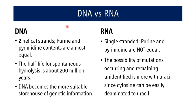DNA has two helical strands and purines and pyrimidines are almost equal, following Chargaff's rule. RNA is single-stranded though it has stems and loops, and purines and pyrimidines are not equal. The half-life of spontaneous hydrolysis in DNA is about 200 million years, showing its extreme stability. The possibility of mutations remaining unidentified is more with RNA viruses because cytosine can easily be deaminated to uracil, causing frequent rapid mutations. Therefore, DNA becomes the more suitable storehouse of genetic information.